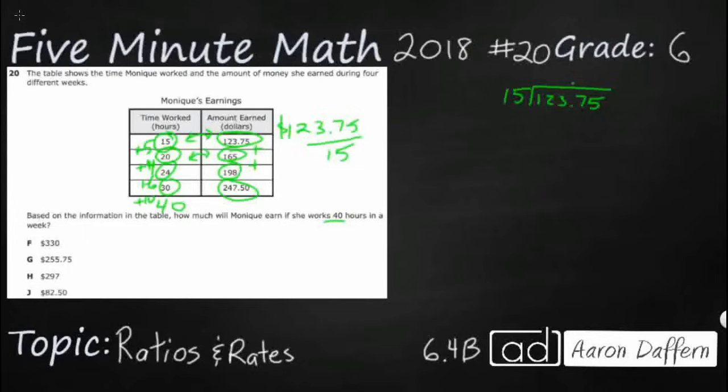So let's see, 15 doesn't go into 12, it's going to go into 123. Let's try 8 times. Let's just see if that works. So that's going to be 40, 120, yep, that's just perfect. So now we're going to bring down this 3, just one number at a time, just like we learned in fourth grade. 37, 15 goes into 37 twice. It gets pretty simple after this. 75, 15 times 5 is going to be 75. So it looks like she makes $8.25 an hour. That's my first calculation.